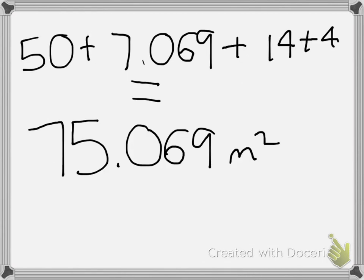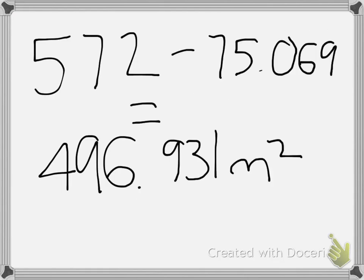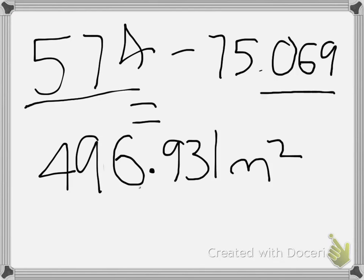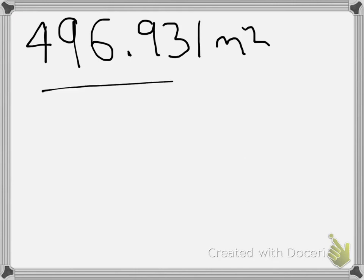Step 5: We now add all of those areas up to get a total of 75.069 meters squared. Step 6: Now we subtract - sorry guys, we got a little mistake - so we subtract the property area by the area of the fountain, house, etc., and we get the answer of 496.931 meters squared. Step 7: This is how much grass sod we would need to cover the lawn.